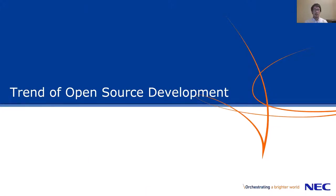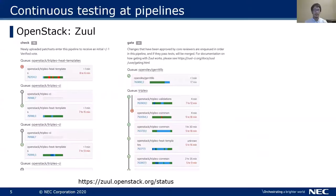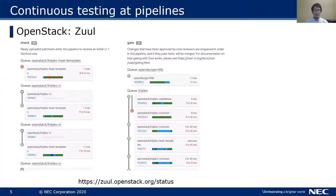I want to introduce the overview of the trend of open source development. Recently, open source projects like Kubernetes and OpenStack tend to be developed with continuous testing at CI pipelines. The OpenStack community uses a tool to implement this pipeline, and changes must pass a queue to merge into the mainline. The Kubernetes community uses Prow for doing the same thing. If proposing a single change with a pull request or patch, the change needs to pass the test set.